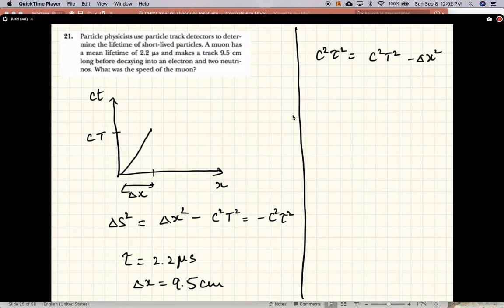And also from time dilation, we know that the lab time - the time the muon lives in the lab - is related to the proper lifetime via gamma times tau. So we'll substitute that. So c squared tau squared equals c squared gamma squared tau squared minus delta x squared.